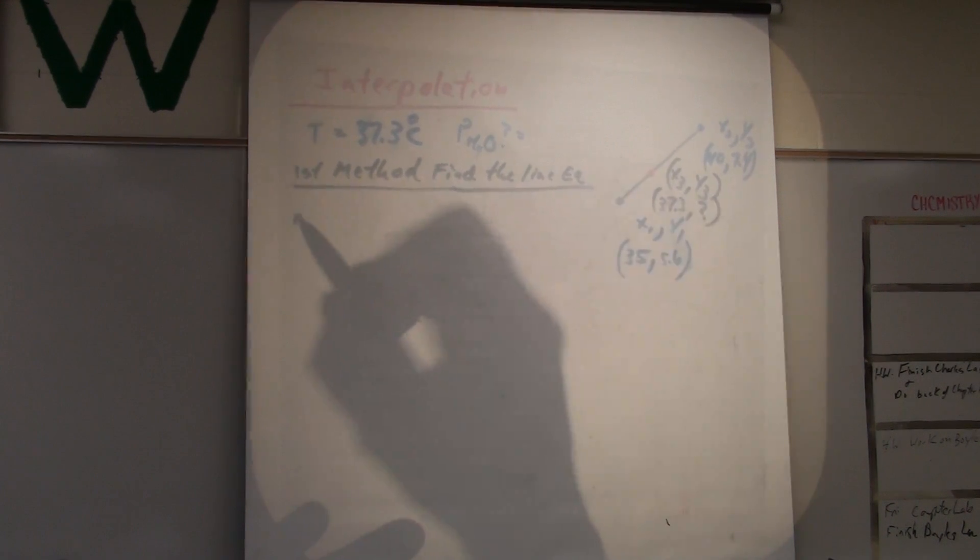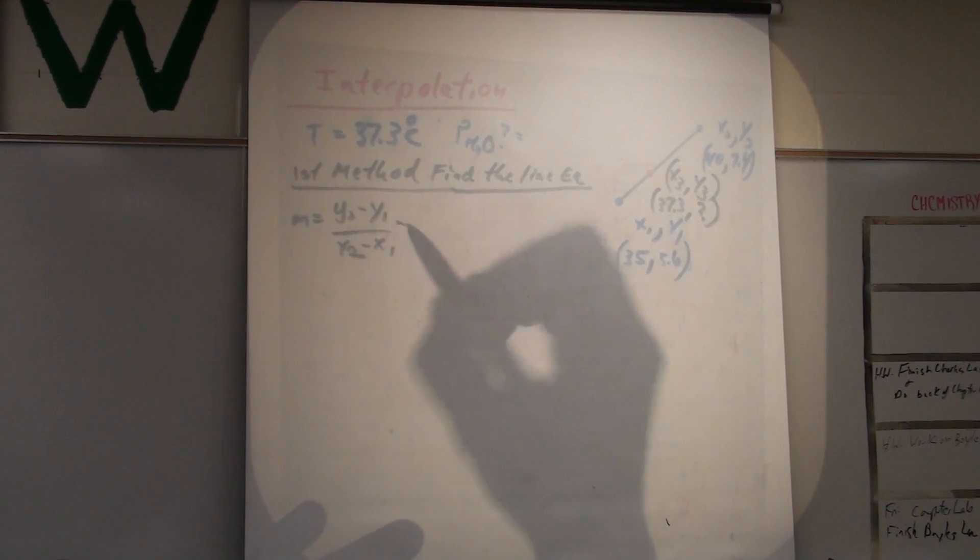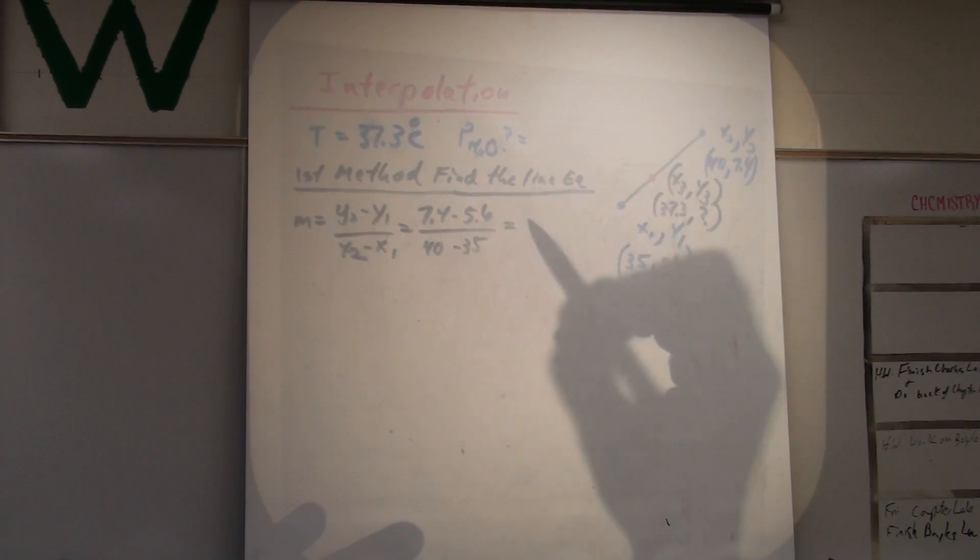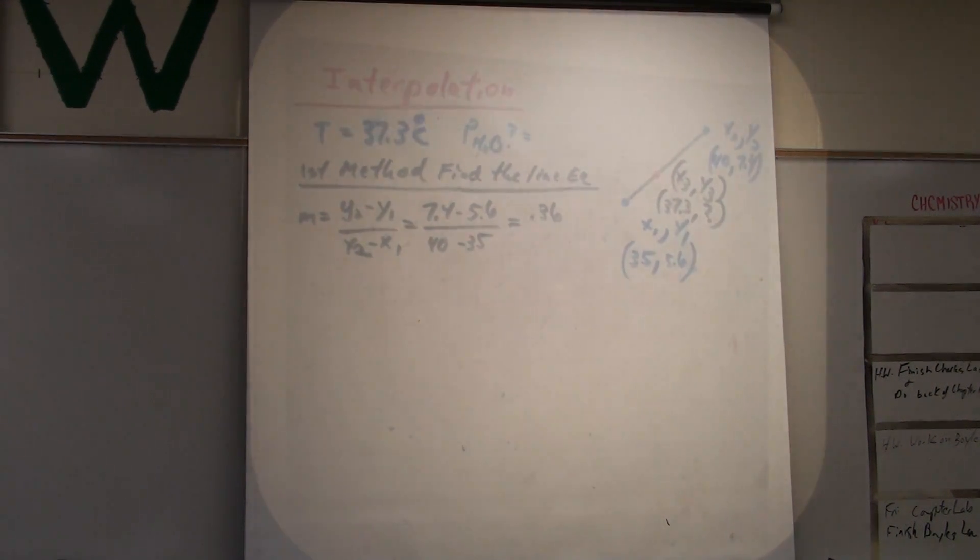So, first thing I'm going to do is find my slope. My slope is change in Y over change in X. So, Y2 minus Y1 over X2 minus X1 is your slope. So, 7.4 minus 5.6 over 40 minus 35. My slope comes out to be 0.36. If I go too fast on anything, let me know.